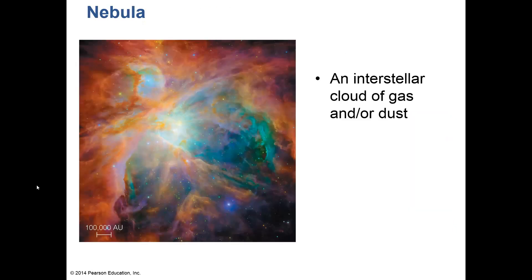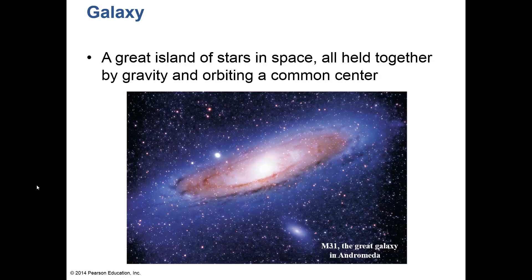When we get away from the solar system we can look at interstellar space and find nebulae. Nebula is Greek for cloud. Here's a beautiful picture of the Orion Nebula, seen in the winter sky — basically a cloud of gas and dust in interstellar space.